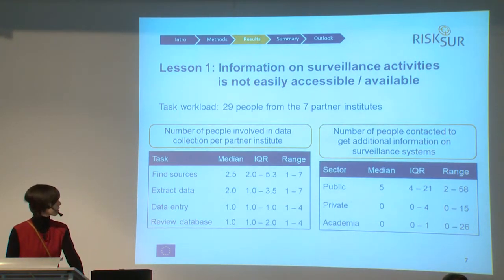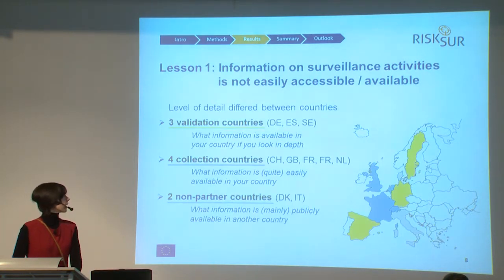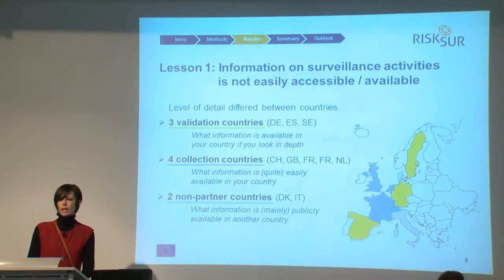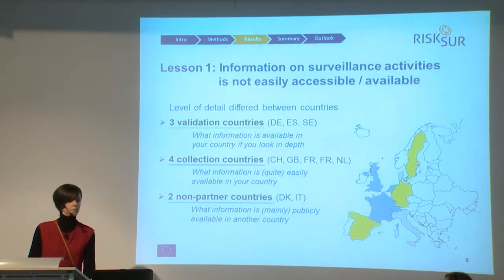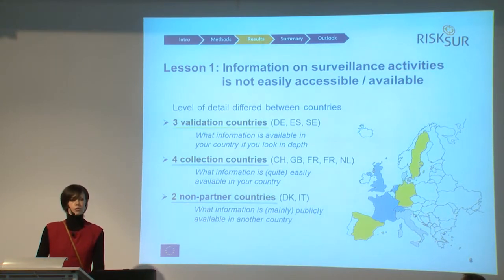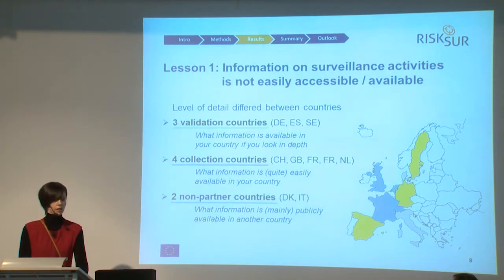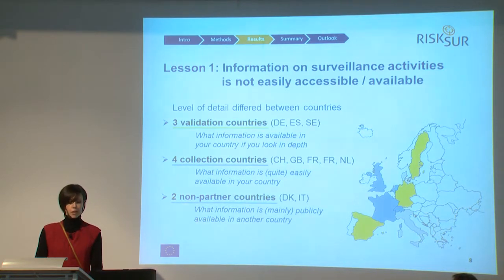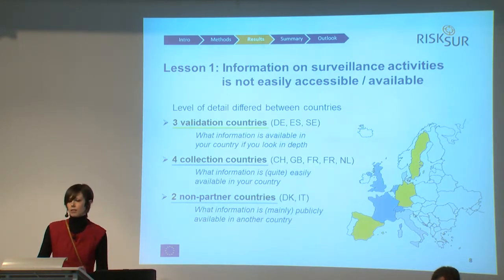Great variation occurred between institutes, and we ended up with three different levels of detail in our data. The first and most complete level of detail occurred in what we call validation countries, shown in yellow — countries hosting the RISC-SUR partner institutes in charge of this review. A lot of effort was made to retrieve the required information, reflecting what surveillance information is available in a country if you really try hard to find it.